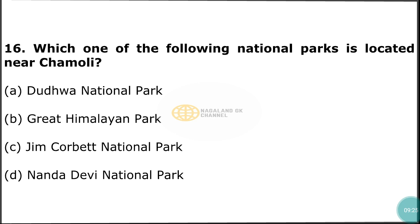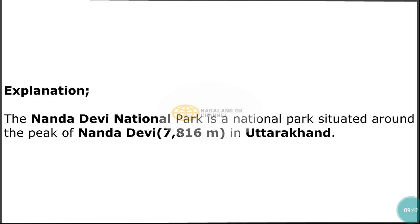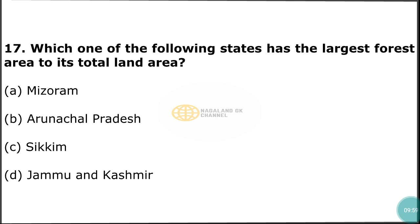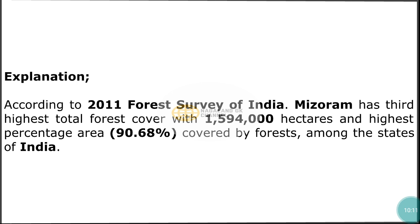Question number 16: Which one of the following national parks is located near Joshimath? The correct answer is option D — Nanda Devi National Park. Nanda Devi National Park is situated around the peak of Nanda Devi, 7,860 meters, in Uttarakhand. Question number 17: Which one of the following states has the largest forest area relative to its total land area? The correct answer is option A — Mizoram. According to the 2011 Forest Survey of India, Mizoram has the highest percentage area of 90.68% covered by forest among the states of India.